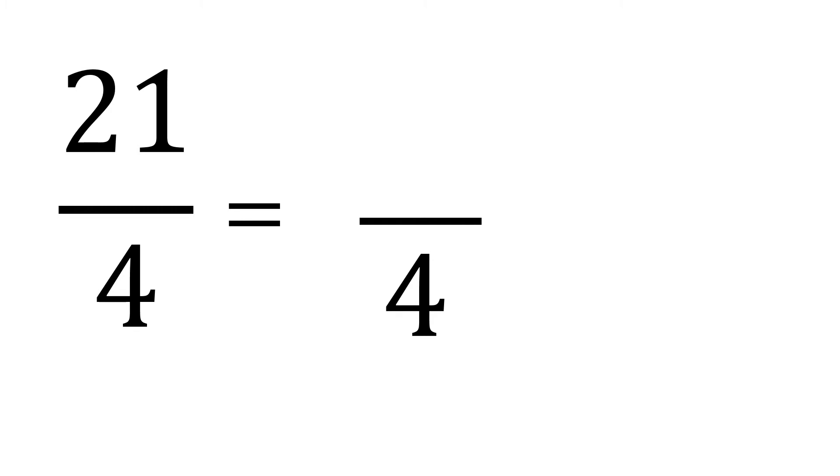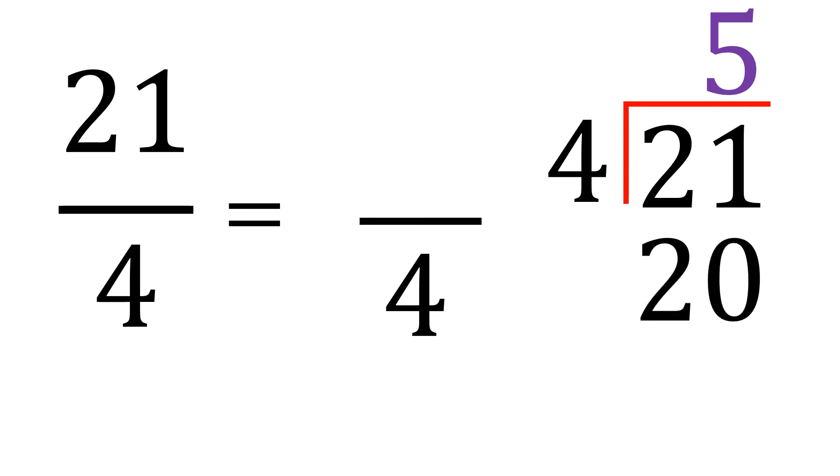So to do that, we will divide 21 by 4. So it will be 5, because 5 times 4 is 20, and that's the closest to 21. And then subtract, so the difference is 1. So this 1, or the remainder, will be your numerator. And 5, which is your quotient, will be your whole number. So 21 over 4 is equal to 5 and 1 fourth.